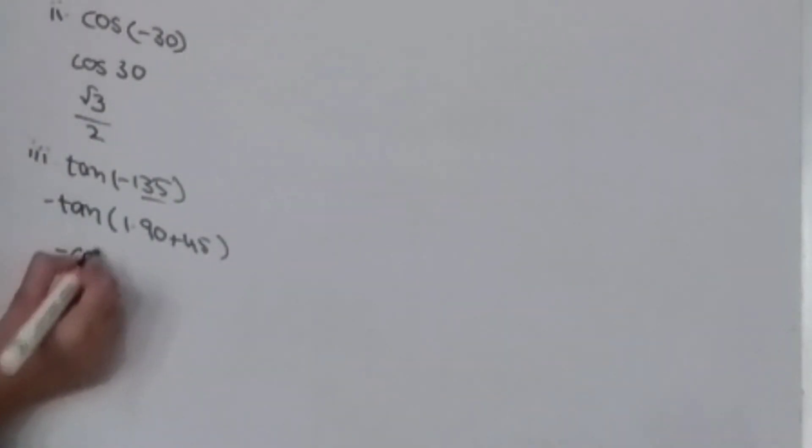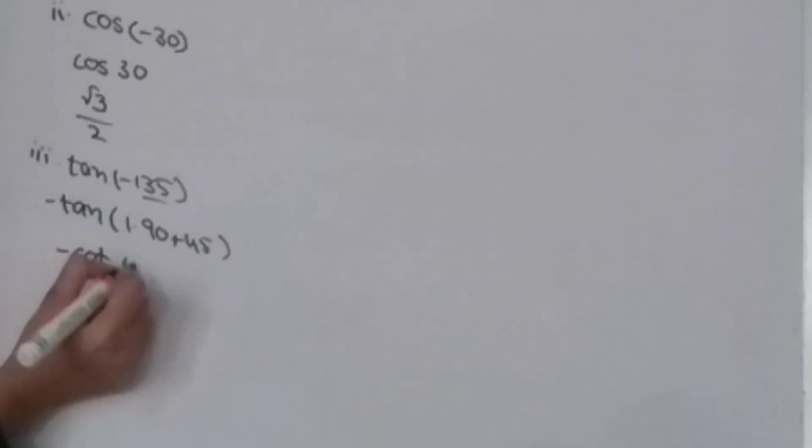Third question: tan(−135°). Then minus tan — we should write the value of 135, splitting it as 1×90° + 45°. Then it will become minus(−tan 45°), which gives plus 1.